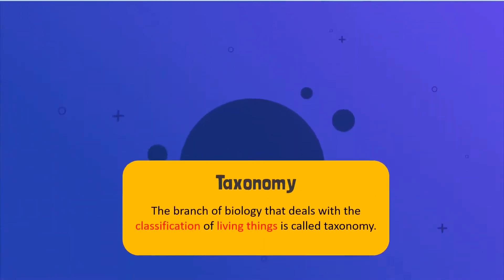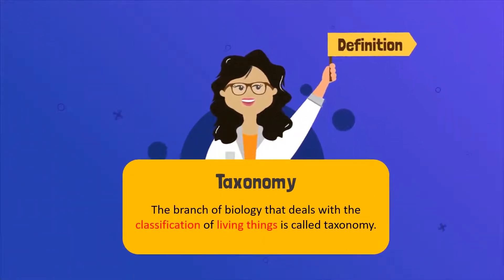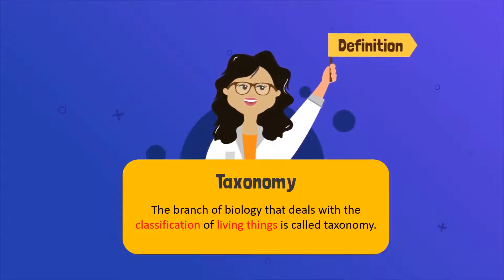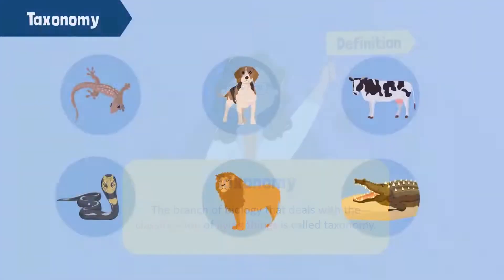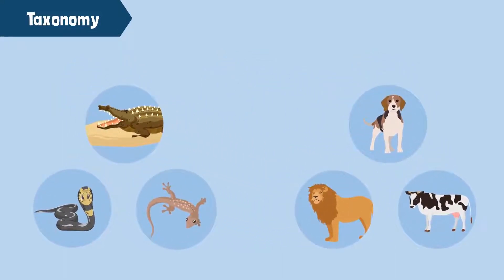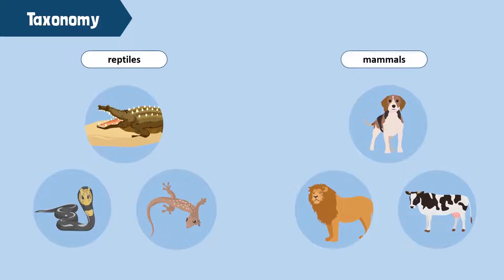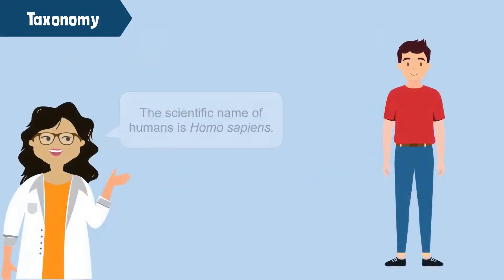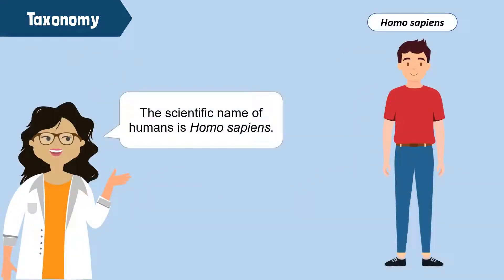The branch of biology that deals with the classification of living things is called taxonomy. Organisms with similar characteristics are grouped together, whereas organisms with dissimilar characteristics belong to different groups. Moreover, every organism is given a unique scientific name in accordance with the principles of binomial nomenclature. For example, the scientific name of humans is Homo sapiens.